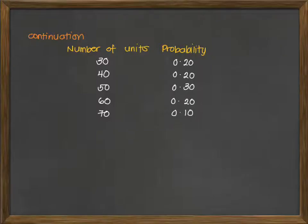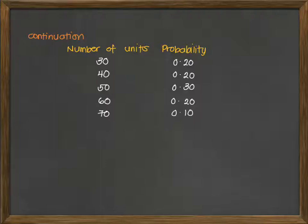We have varying demands during lead time: 30, 40, 50, 60, and 70. So the minimum demand during lead time is 30 while the maximum demand is 70 with varying levels over time. The probability given shows a 20% chance of having 30 units of demand, 20% of having 40 units, 30% for 50 units, 20% for 60 units, and 10% for 70 units.